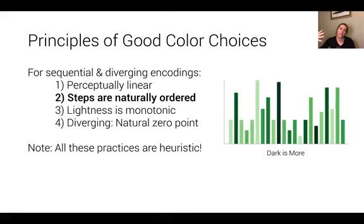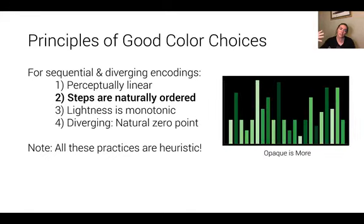When using color to represent numeric data, we want to make sure our steps are naturally ordered — if I choose any pair of colors from my encoding, I should intuitively understand which value differences are larger and which are smaller. We typically do this by assigning darker values to larger numbers, so a dark bar represents the largest value in the data set. This is related to what is called the dark-is-more bias: darker bars are associated with larger values.